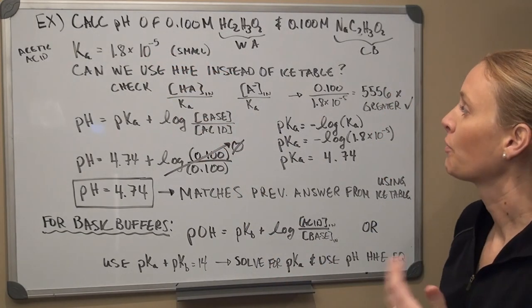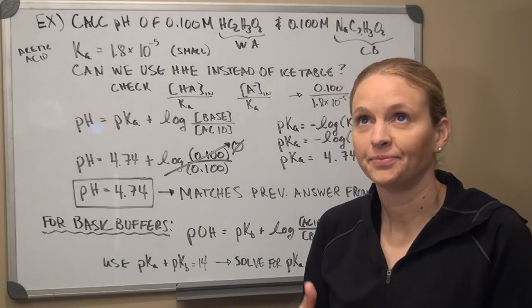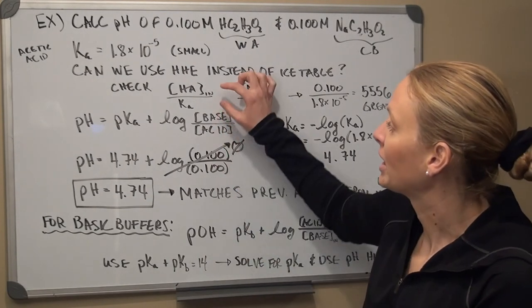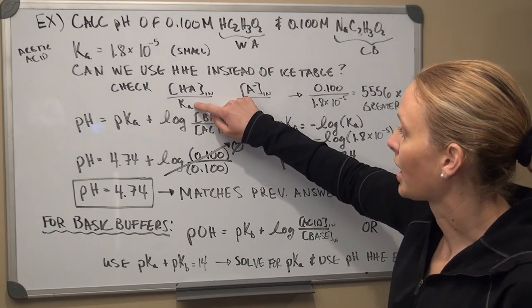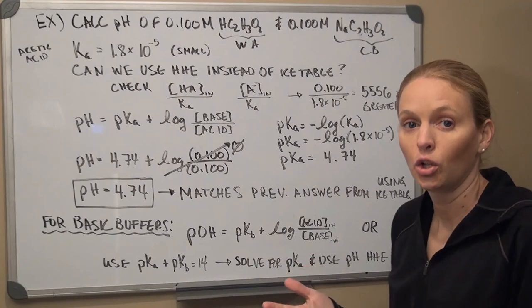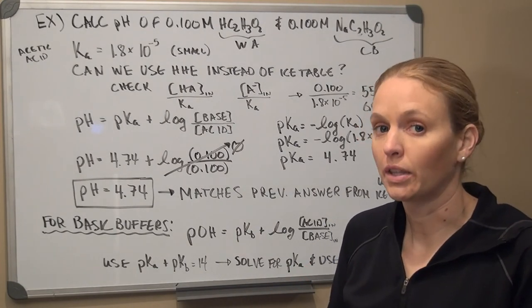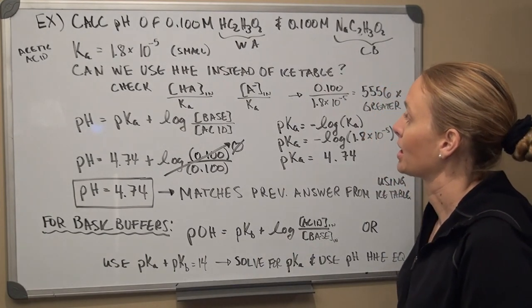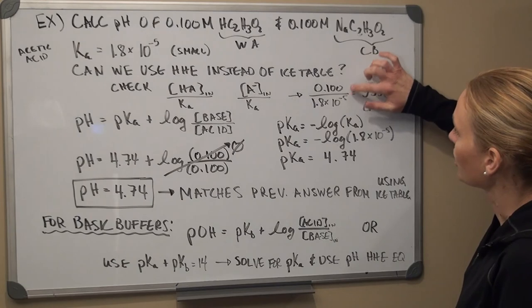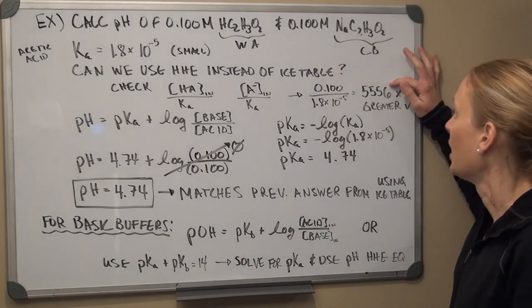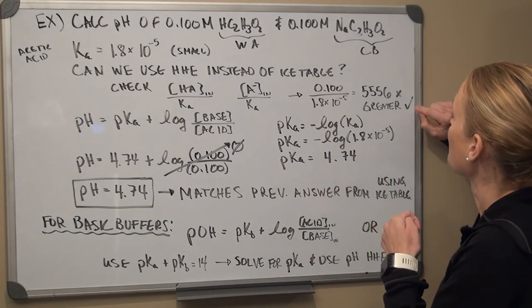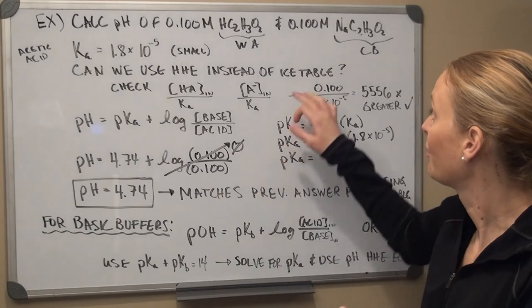Thinking about the conditions needed to use Henderson-Hasselbalch instead of an ice table: we need the ratio of initial concentration to Ka for both species to be relatively large, around 400. When I do that calculation here, I get over 5,000 — well above the 100 to 1,000 range — so I can confidently use the Henderson-Hasselbalch equation.